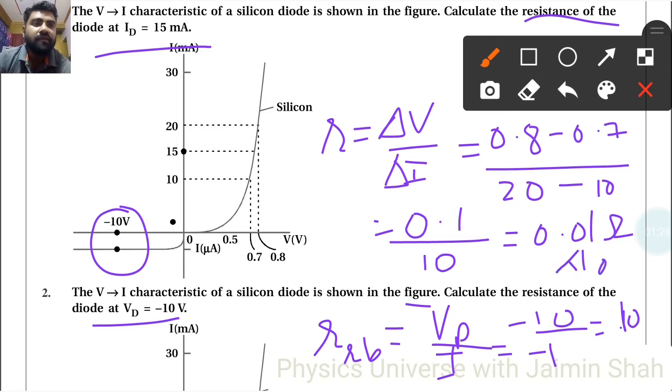Here I have to write because this is milliammeter, so into 10 raised to minus 3, it goes up 10 raised to 3. And here also it is 10 raised to minus 6, because micro, microammeter, so I have to write here into 10 raised to 6. That is ohm, that is resistance.